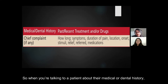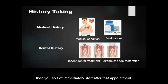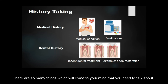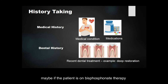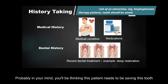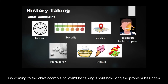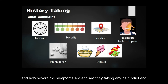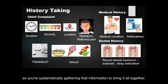When taking the medical and dental history, you gather important context — for example, whether the patient recently had a deep filling, or whether they are on bisphosphonate therapy, which increases the risk if a tooth is lost. As you address the chief complaint, you ask how long the problem has been present, how severe the symptoms are, whether they are taking pain relief, and whether they can locate and point to the tooth. All of this systematically builds the information needed for diagnosis.